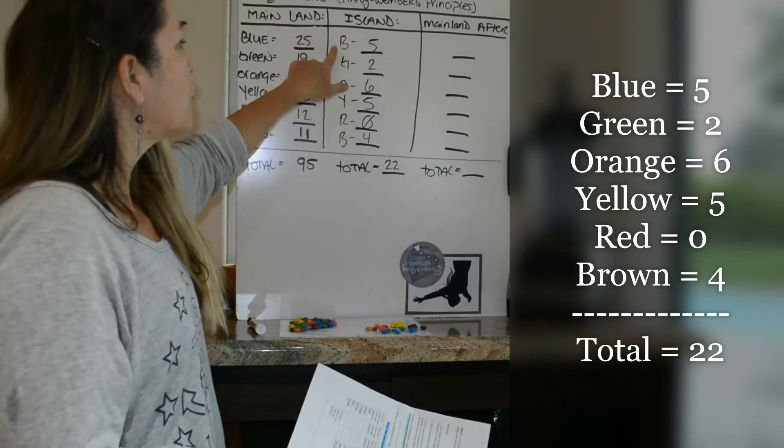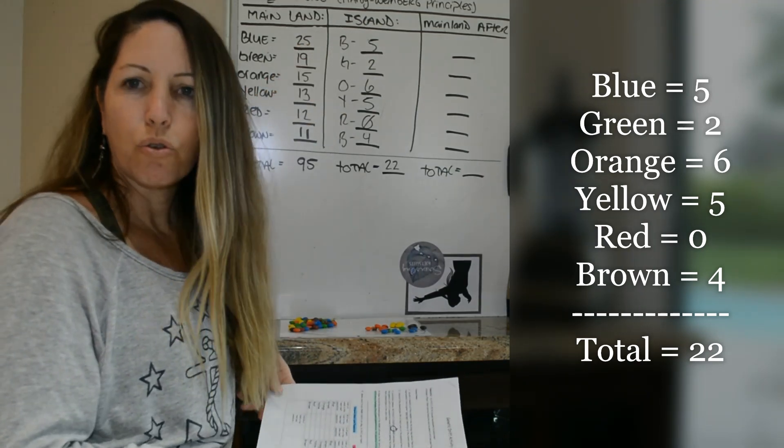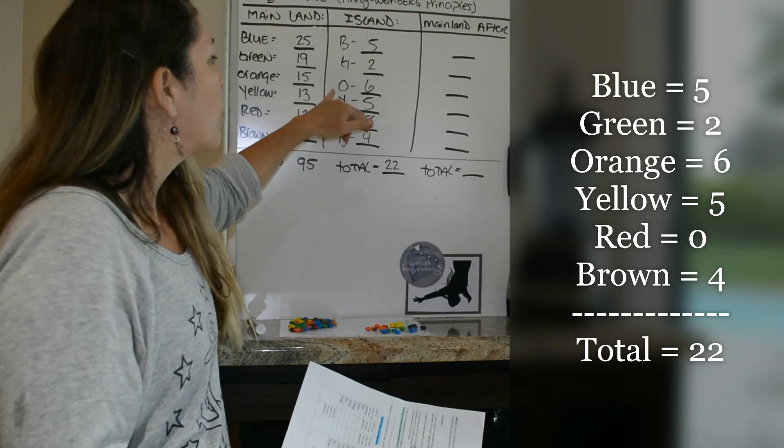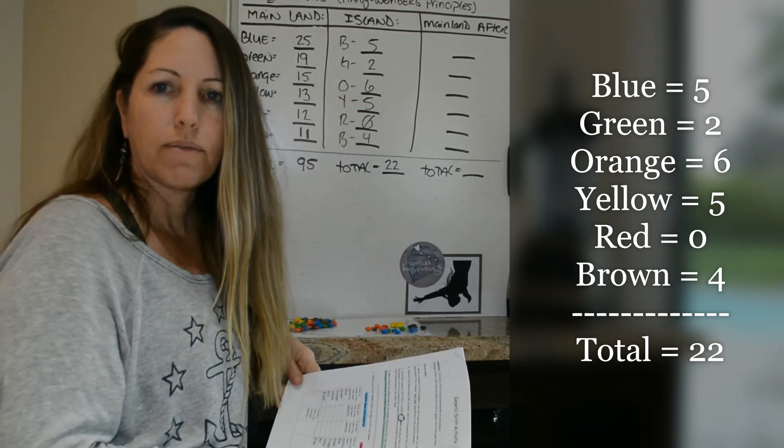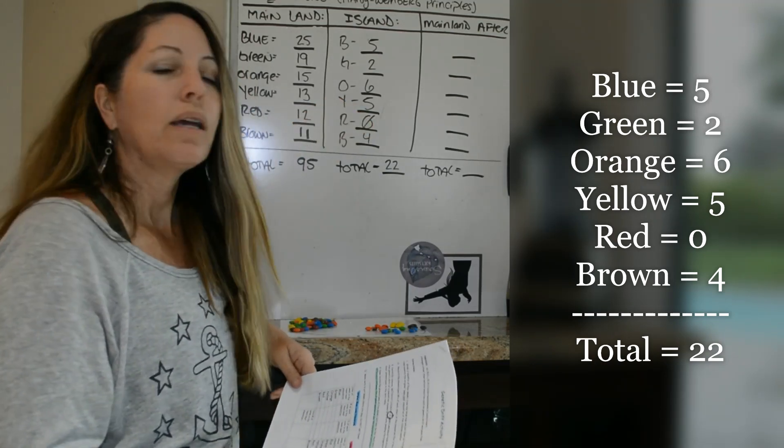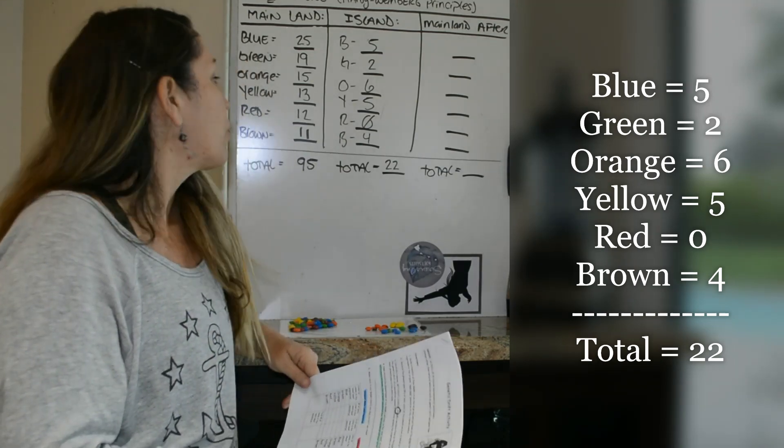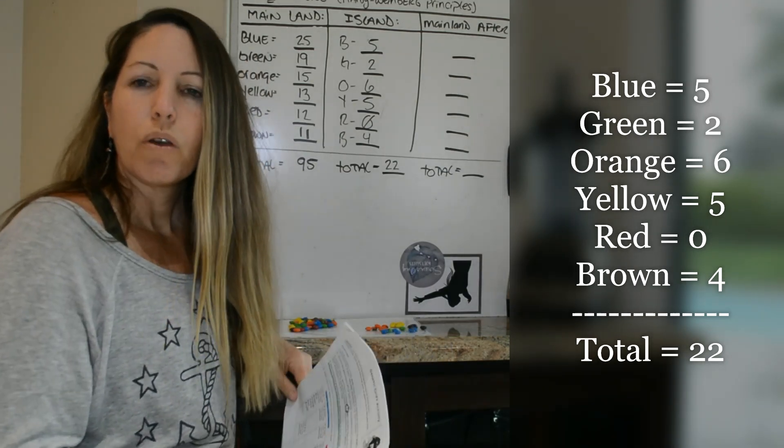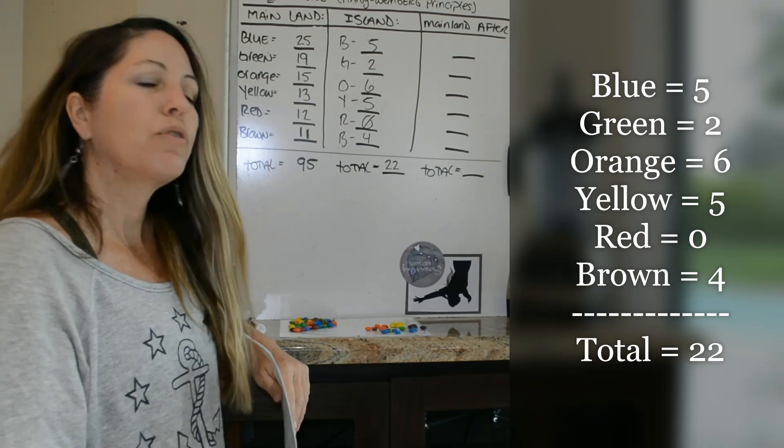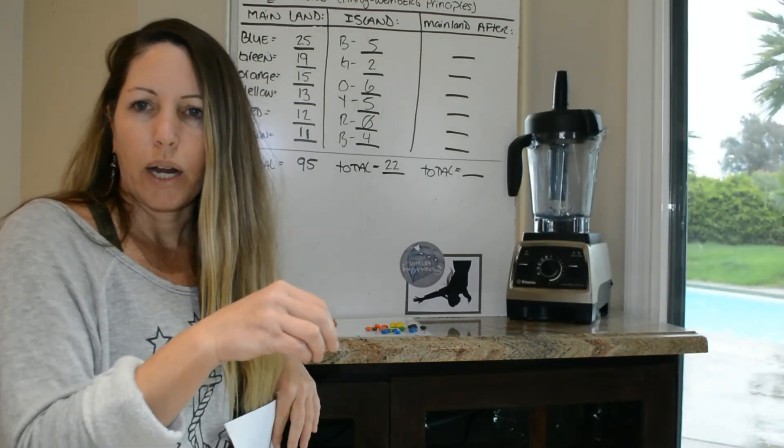So after the hurricane hit, what's our new population stats? Well, for blue, write down five. Green is two. Orange, you have a six. Yellow is five. Red is zero. And brown is four. So you have a total population now of 22 organisms on this new island.